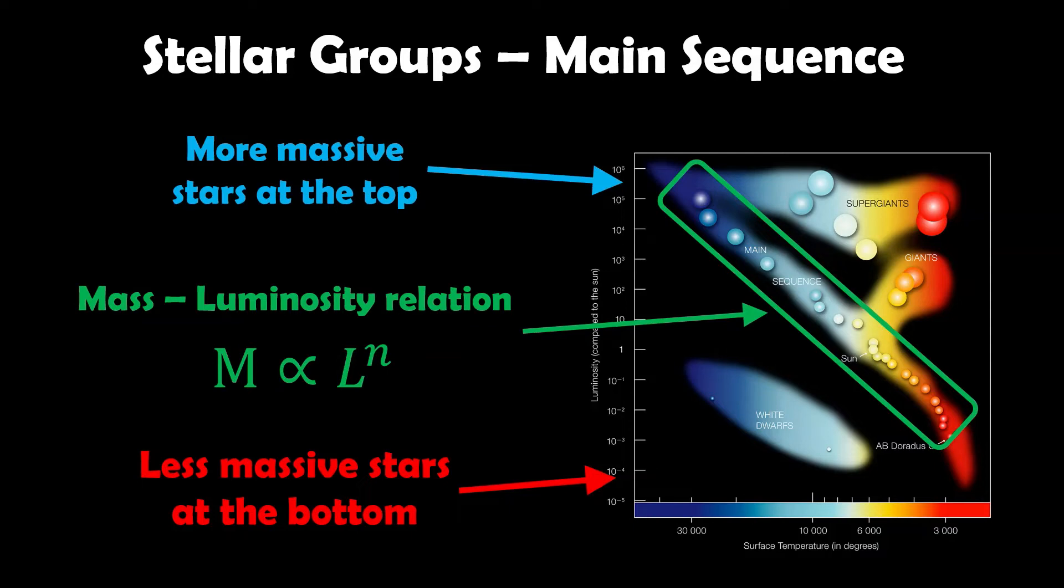The more massive the star, the higher the luminosity. So the most massive stars are going to be at the top, and the less massive stars are going to be at the bottom.